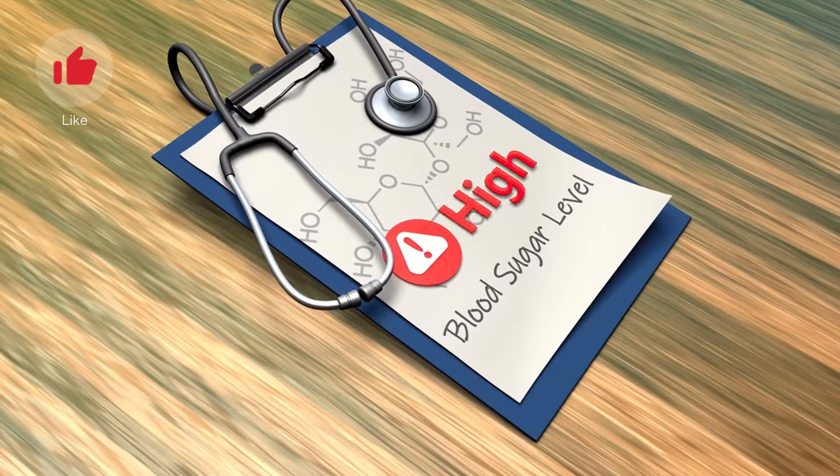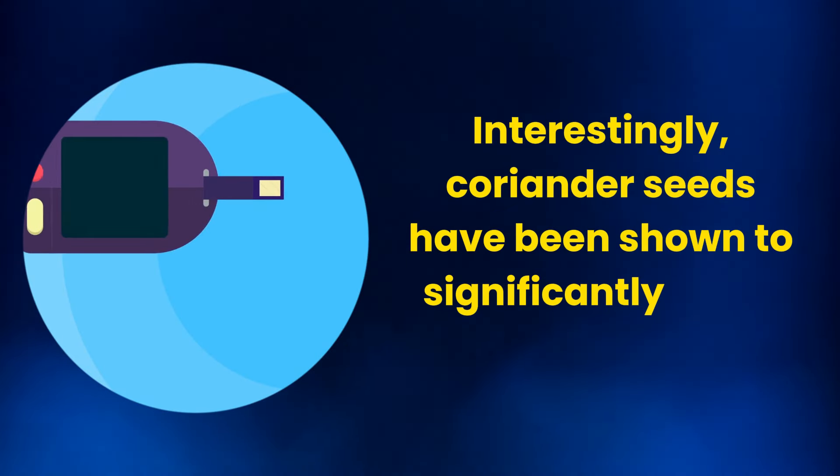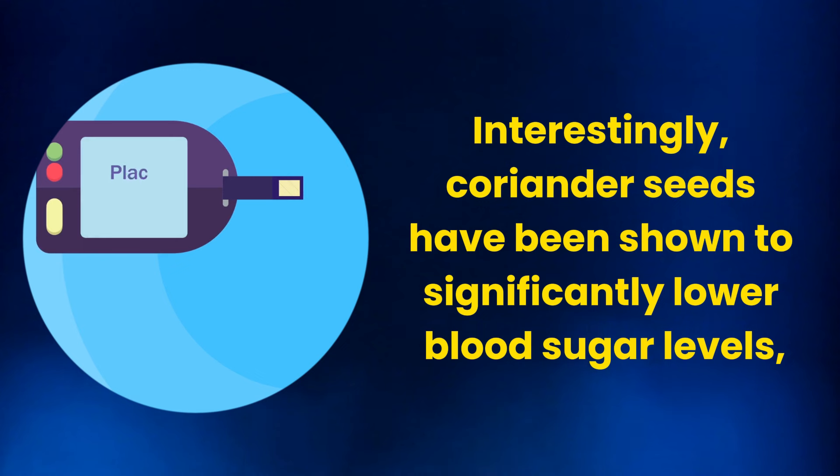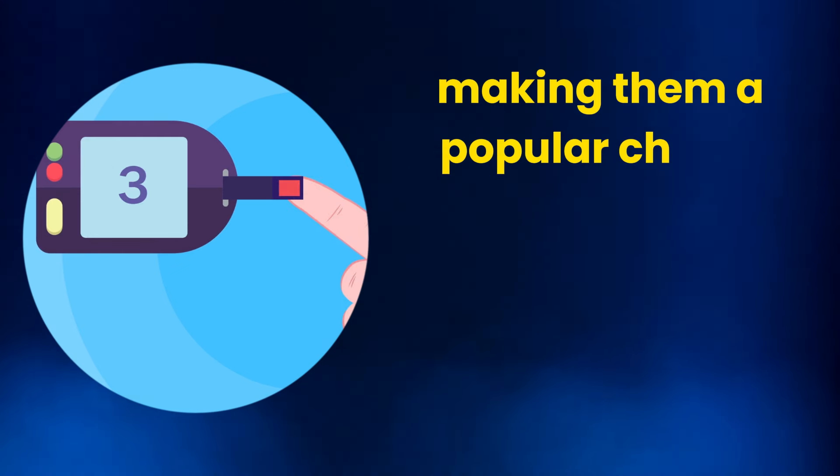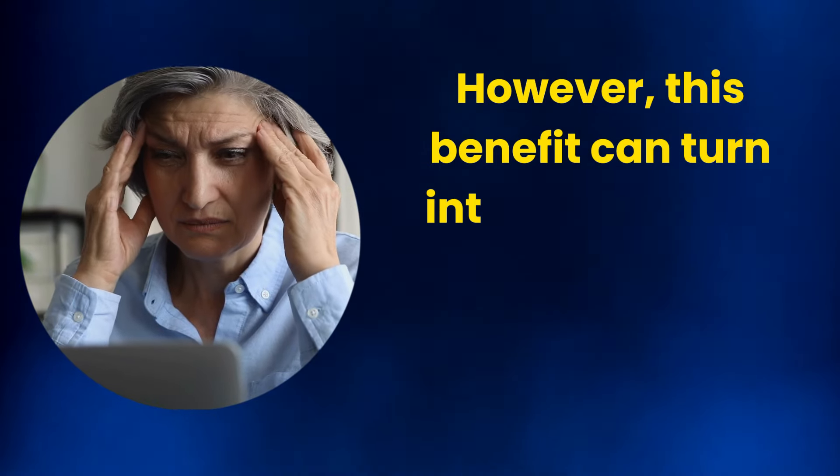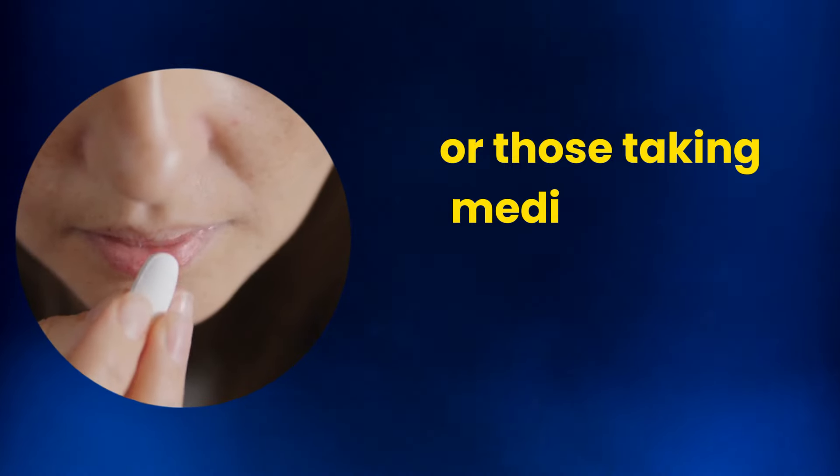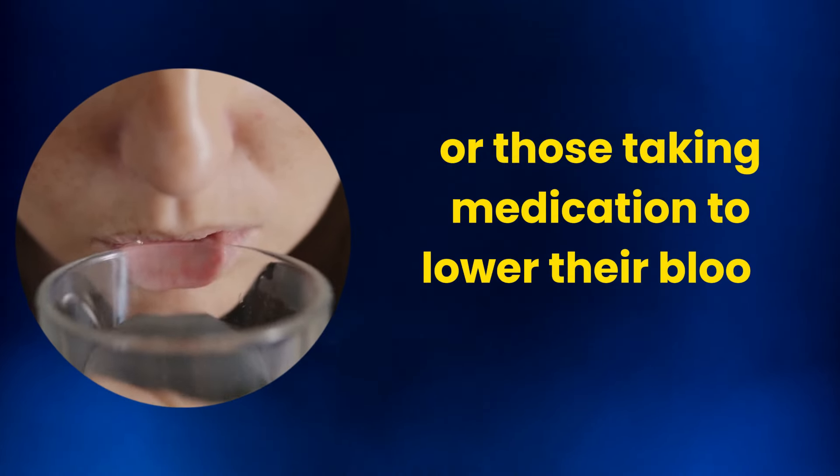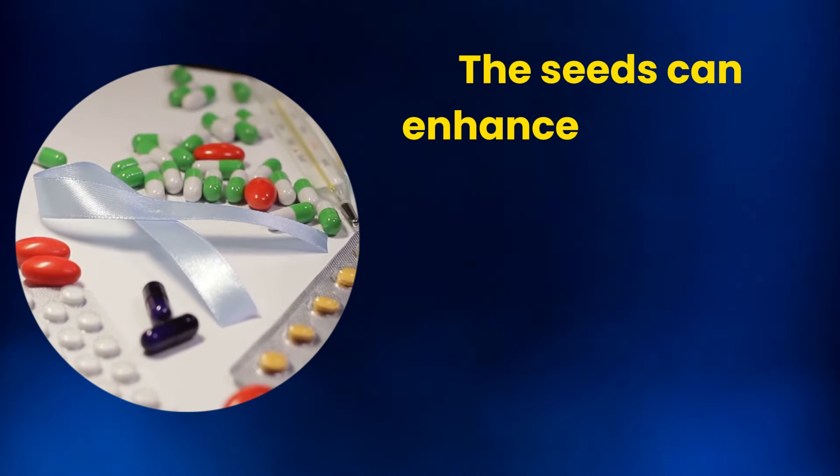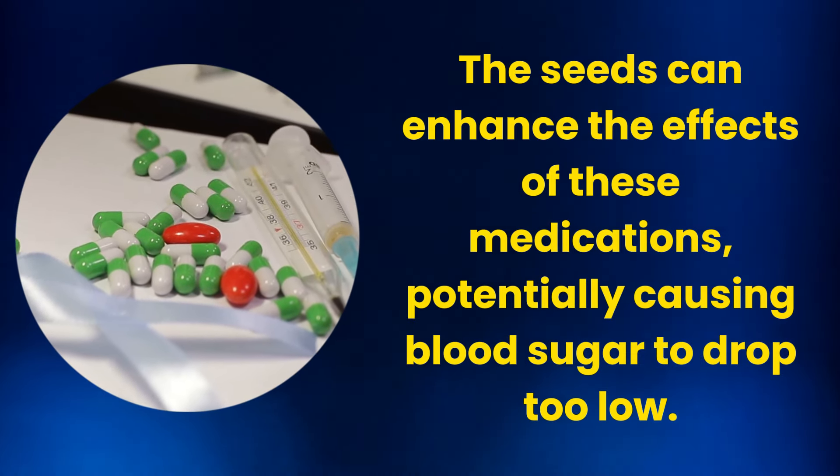Lowered blood sugar levels. Interestingly, coriander seeds have been shown to significantly lower blood sugar levels, making them a popular choice among those looking to manage diabetes naturally. However, this benefit can turn into a side effect for individuals with hypoglycemia or those taking medication to lower their blood sugar. The seeds can enhance the effects of these medications, potentially causing blood sugar to drop too low.